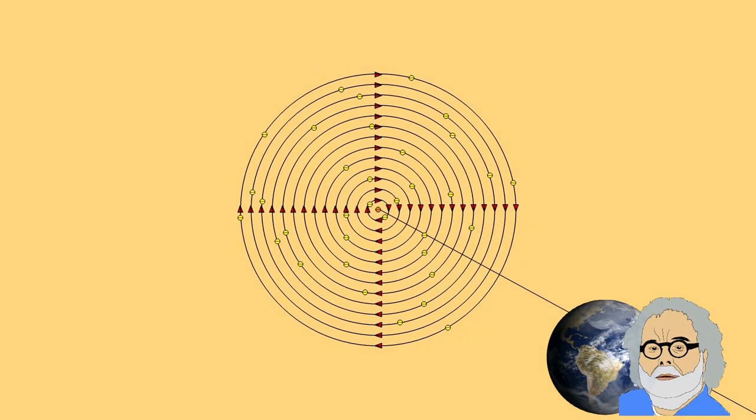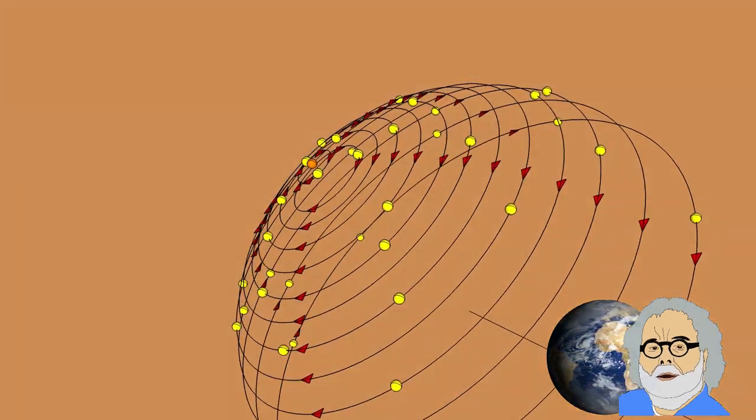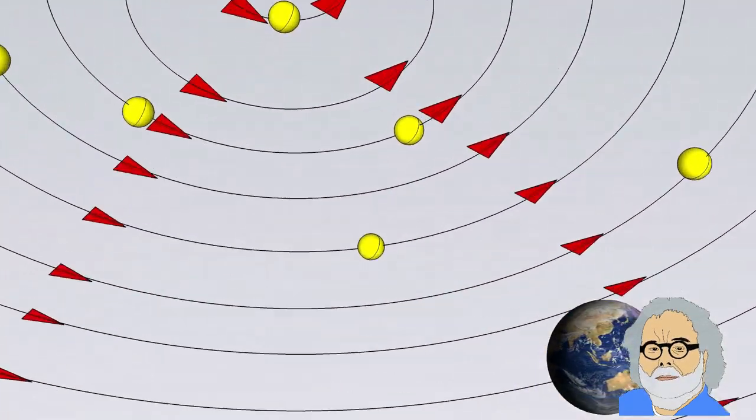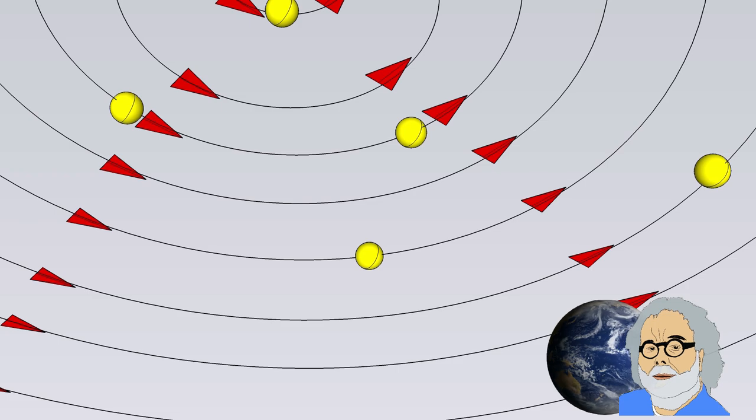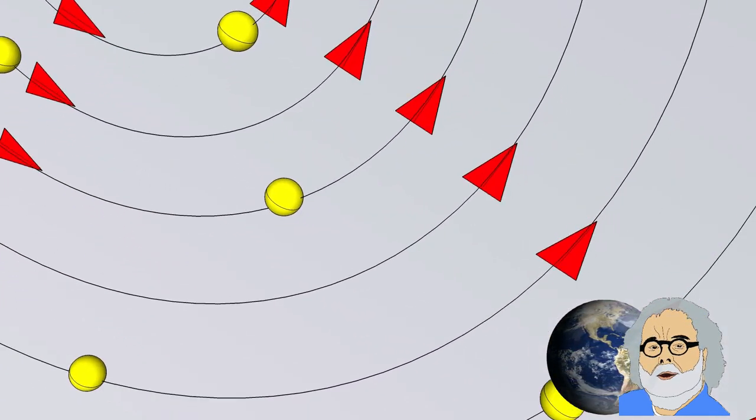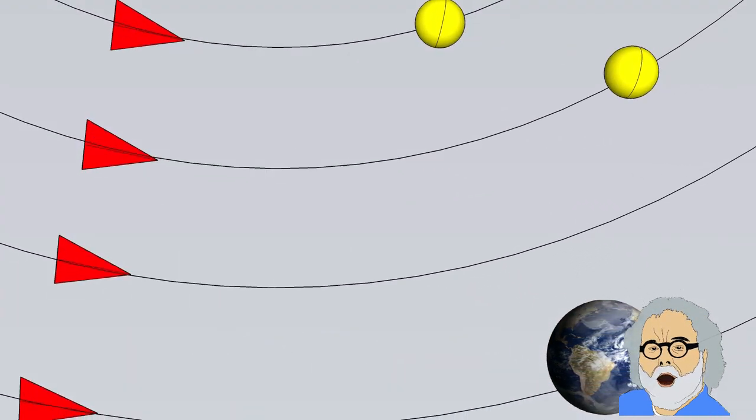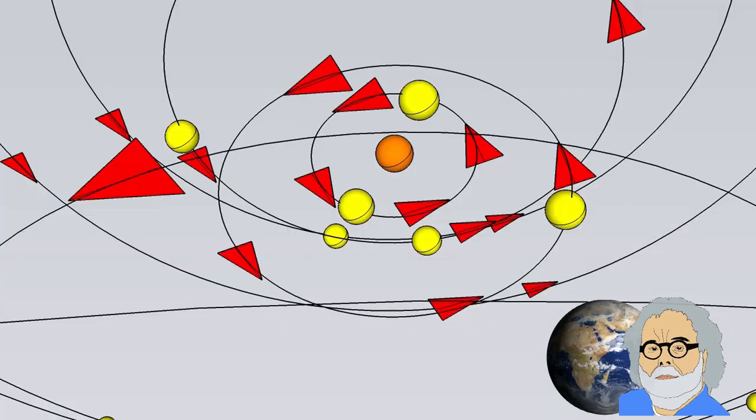They turn counterclockwise, so we are looking in the direction of north. When we turn around and look away from north we see no change in direction. The star trails are still counterclockwise. So this cannot be the right model.